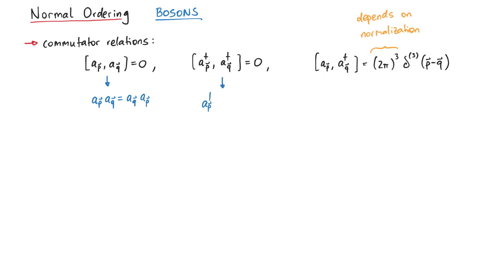The second one tells us that we can always exchange one a-dagger with another a-dagger. And the last one tells us that if we want to exchange an a with an a-dagger, we have to include the commutator term. The important thing here is that inside a normal order product, we ignore this term.